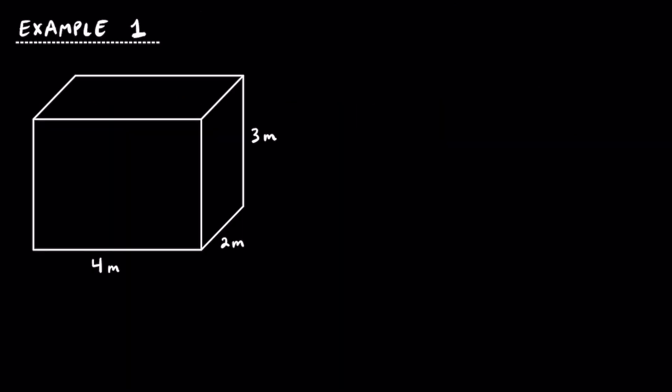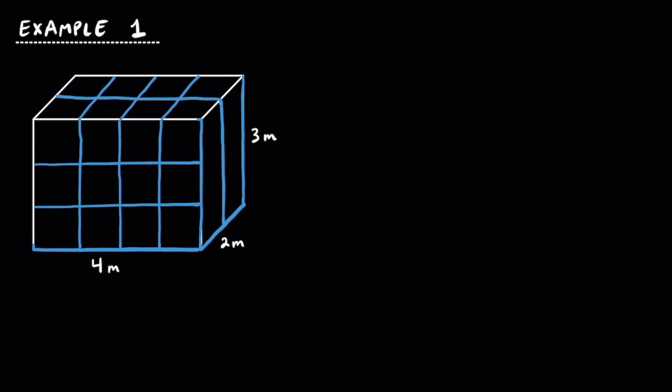In this first example, let's take a look at this rectangular prism that has three dimensions of 4 meters, 2 meters, and 3 meters. And just to give you a little bit better of a visual understanding, I'm going to go ahead and draw the cubes in so you can see them a little bit more clearly. After all, the definition of volume is how many cubes make up this rectangular prism. Given that each of these unit cubes has a volume of one cubic meter, let's see how many fit into this rectangular prism.